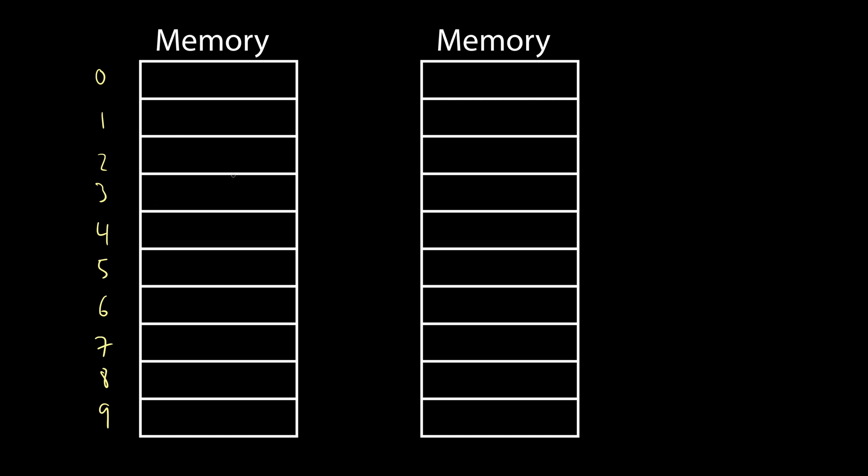So we have nine units of memory here. Like I said, it's going to be simplified. Usually we have different sizes for different primitives. For example, a character only takes one byte and an integer takes four bytes usually, but let's not worry about that. We're going to be learning the fundamentals instead.